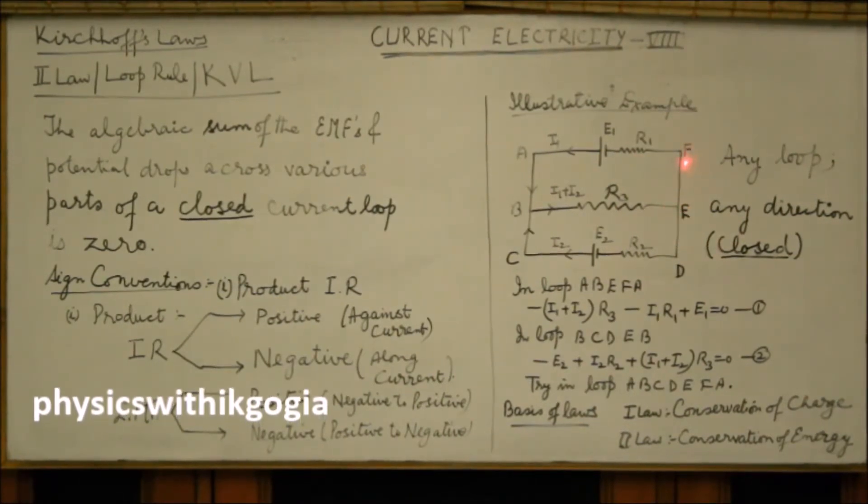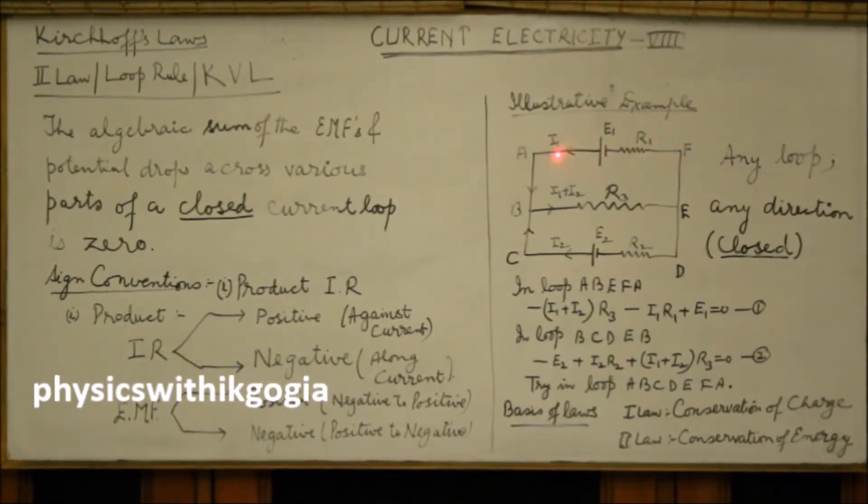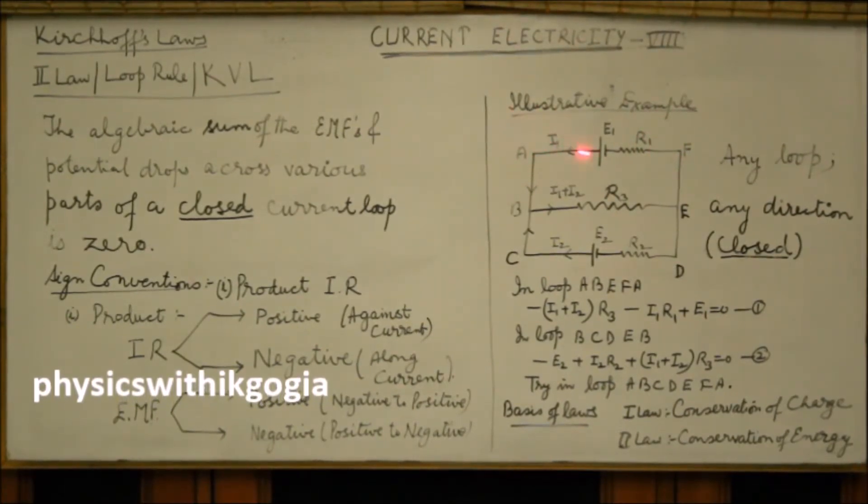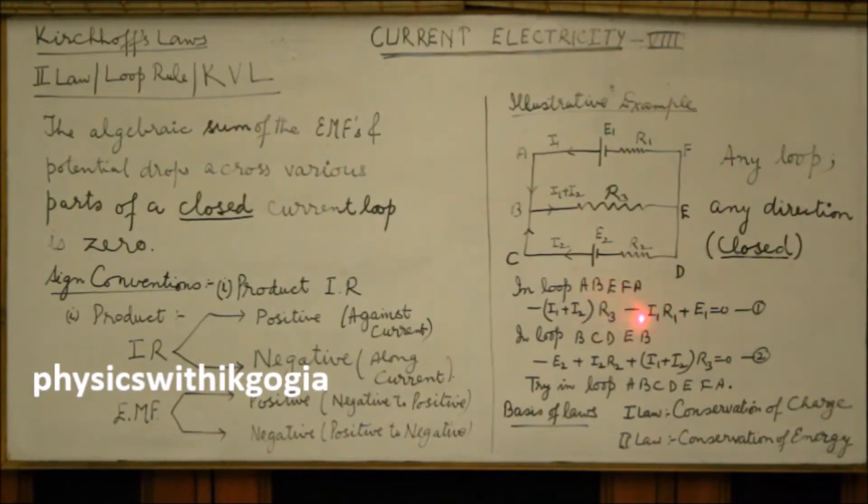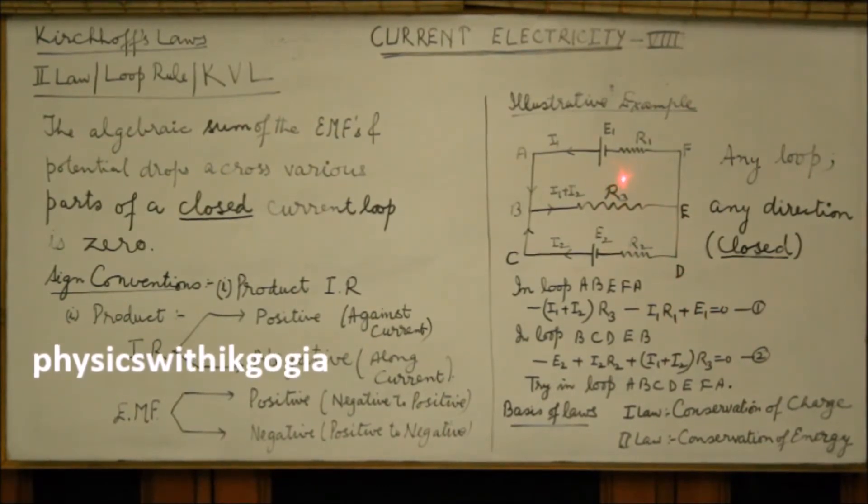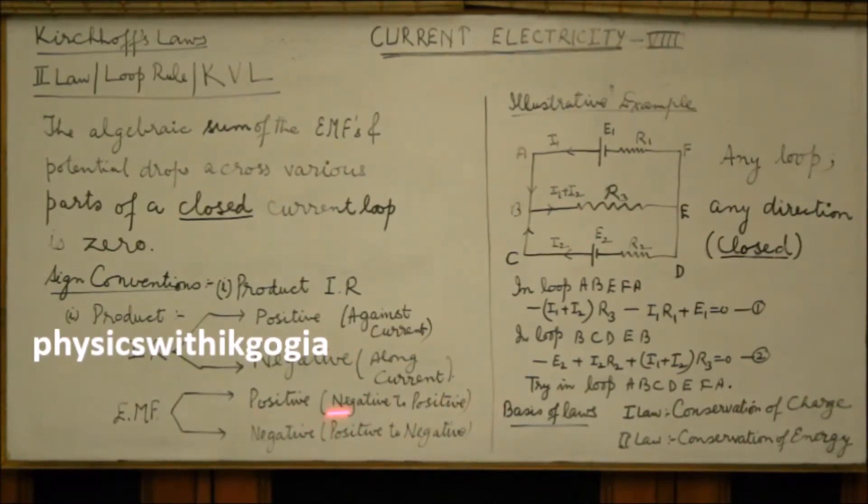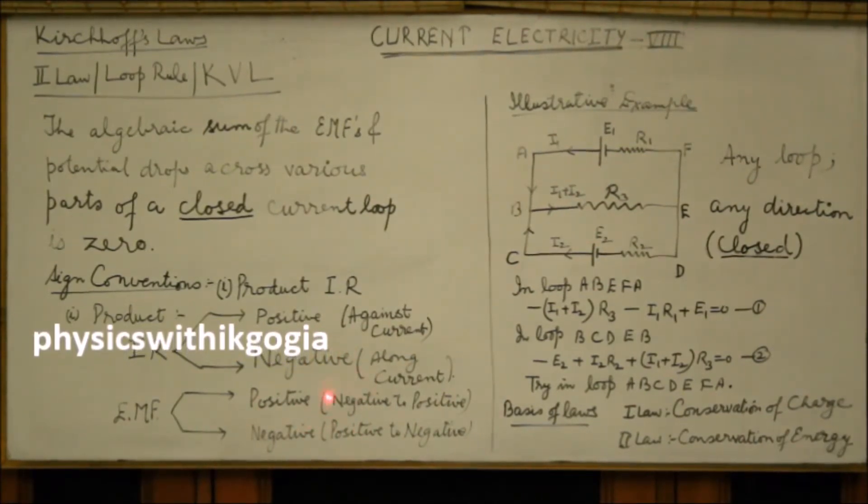Then further, EF and then FA. For R1 again, we are moving along the direction of current and the current is I1. So again, you get the product as negative, minus I1 R1 plus E1. Now this EMF is taken as positive because through the cell, we are moving from negative to positive. And negative to positive, the EMF is to be taken as positive.